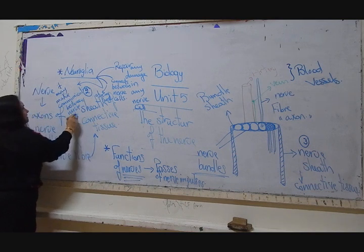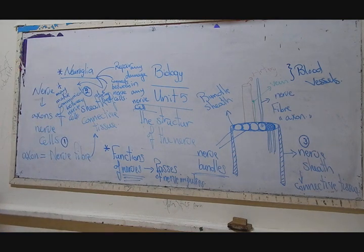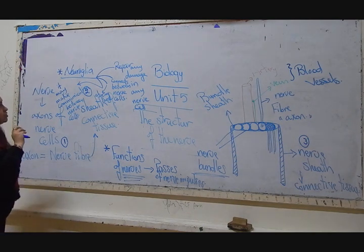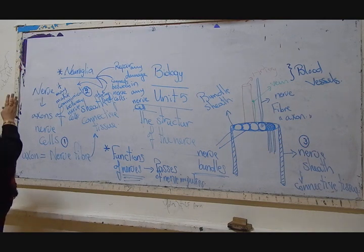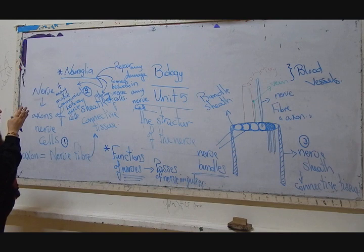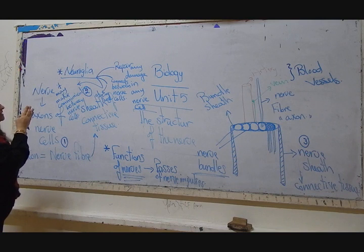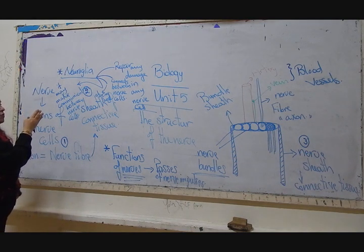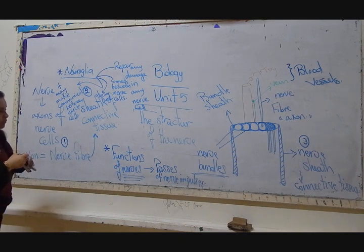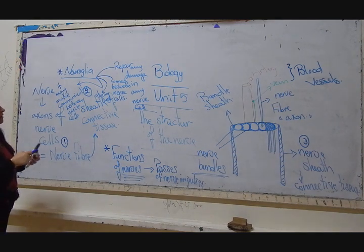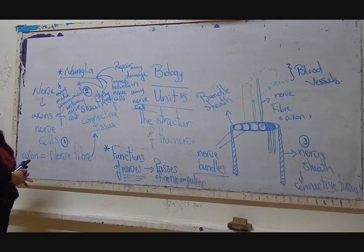So what is meant by neuroglia? Neuroglia is a specific type of nerve cell. What is its work? It has four main functions. Repair any damage which is happening inside the nerve cell. Connect between the nerve cells with each other. It has storing food for the nerve cells. It may make communication between the different types of the nerve cells.